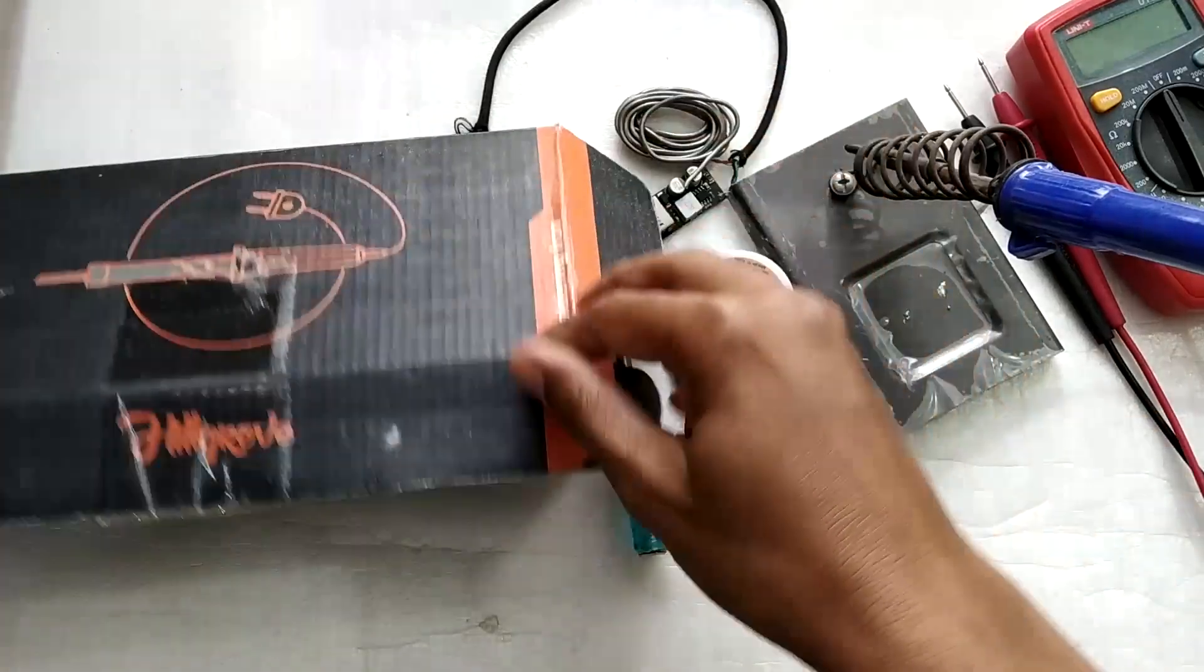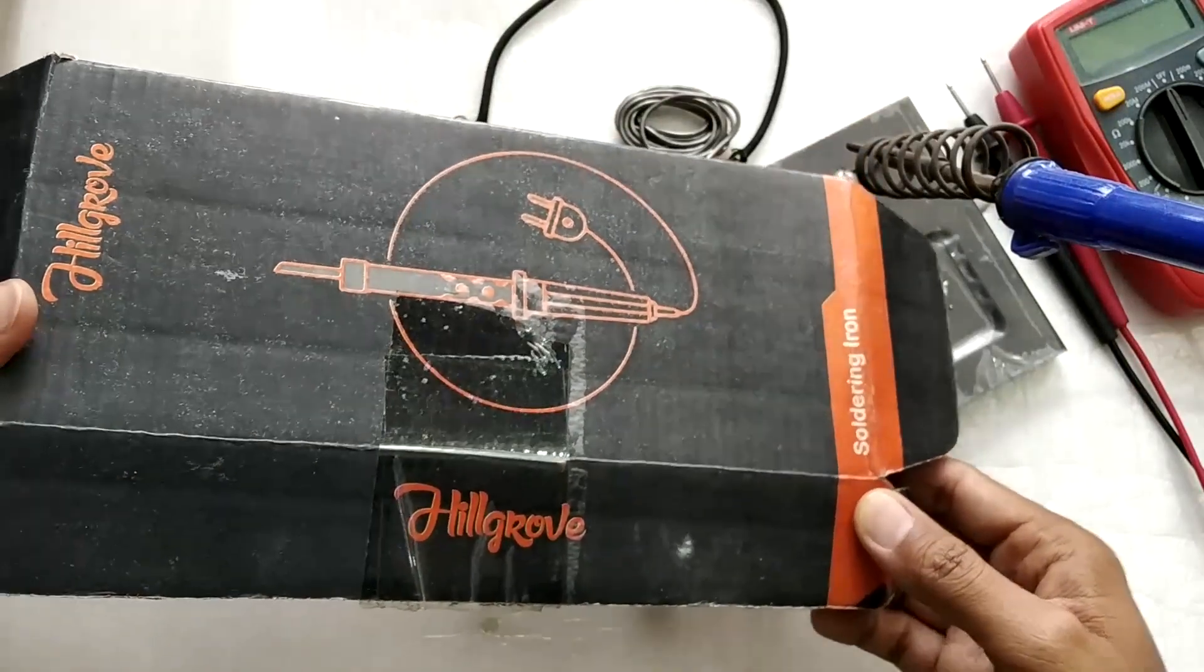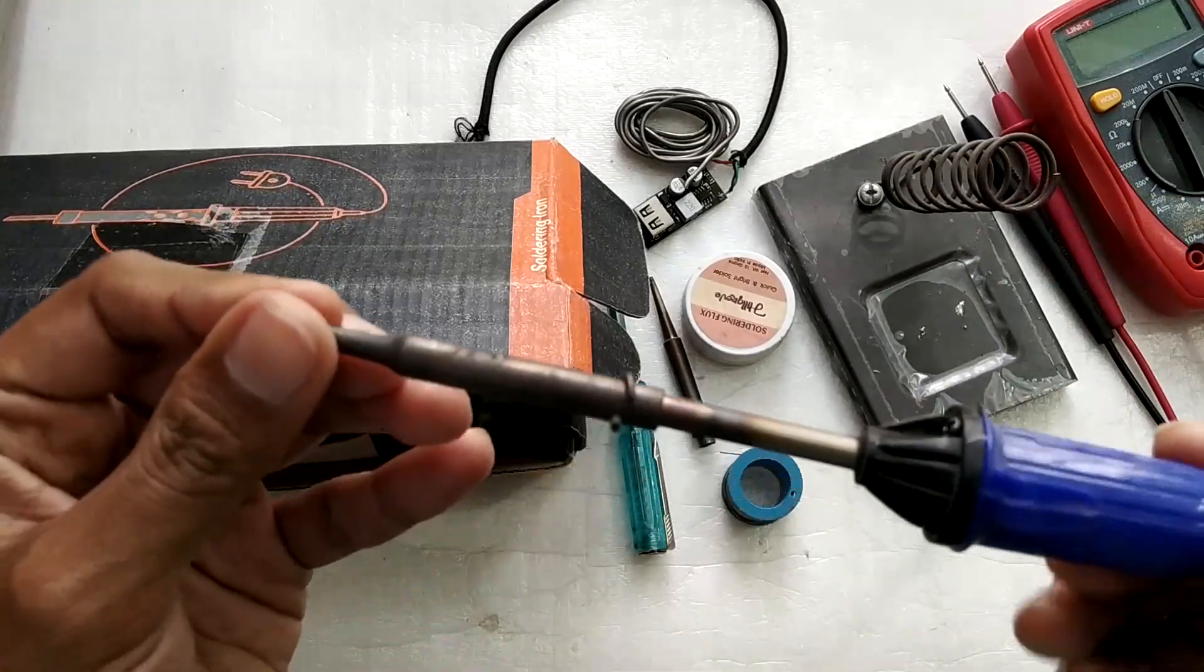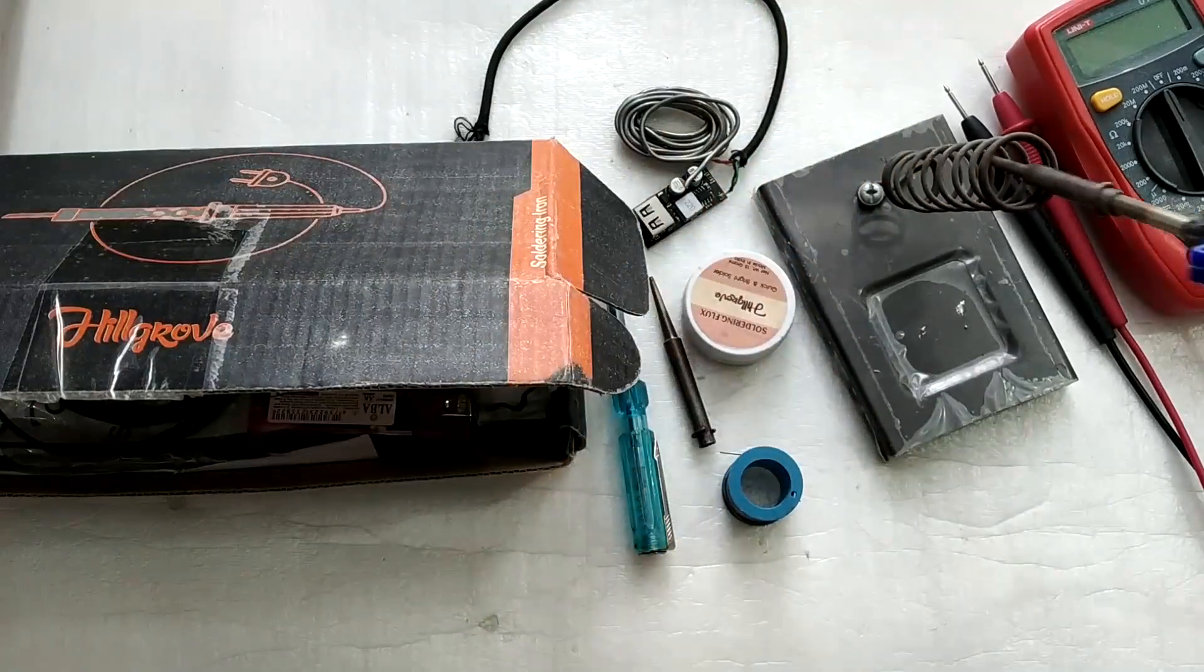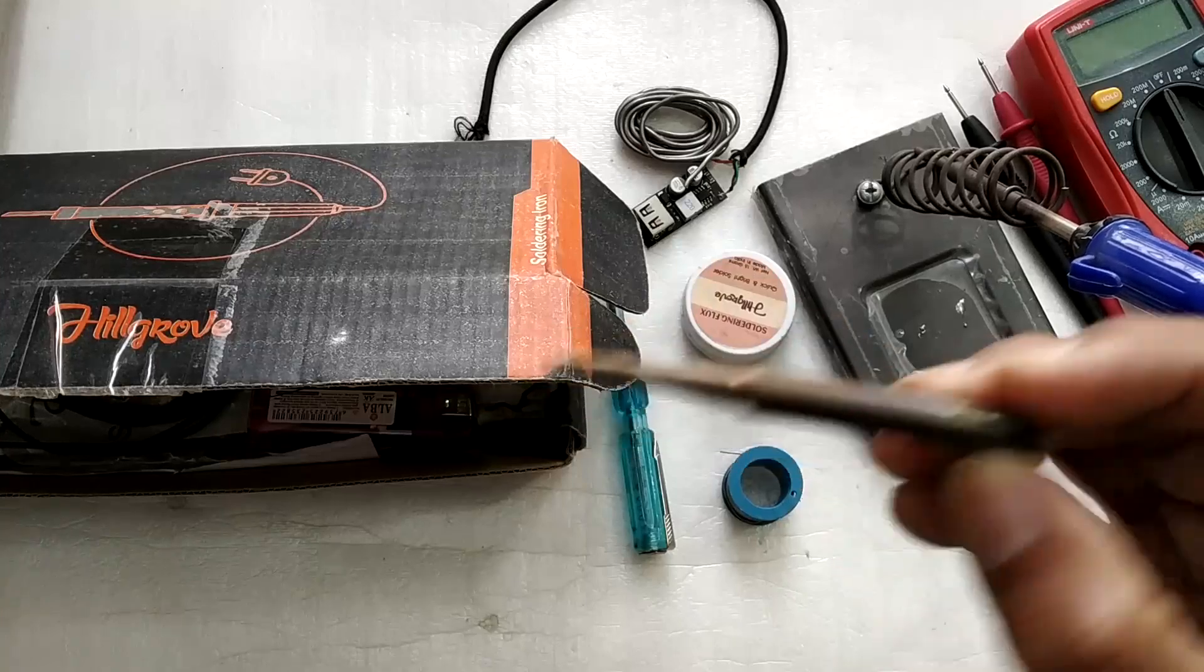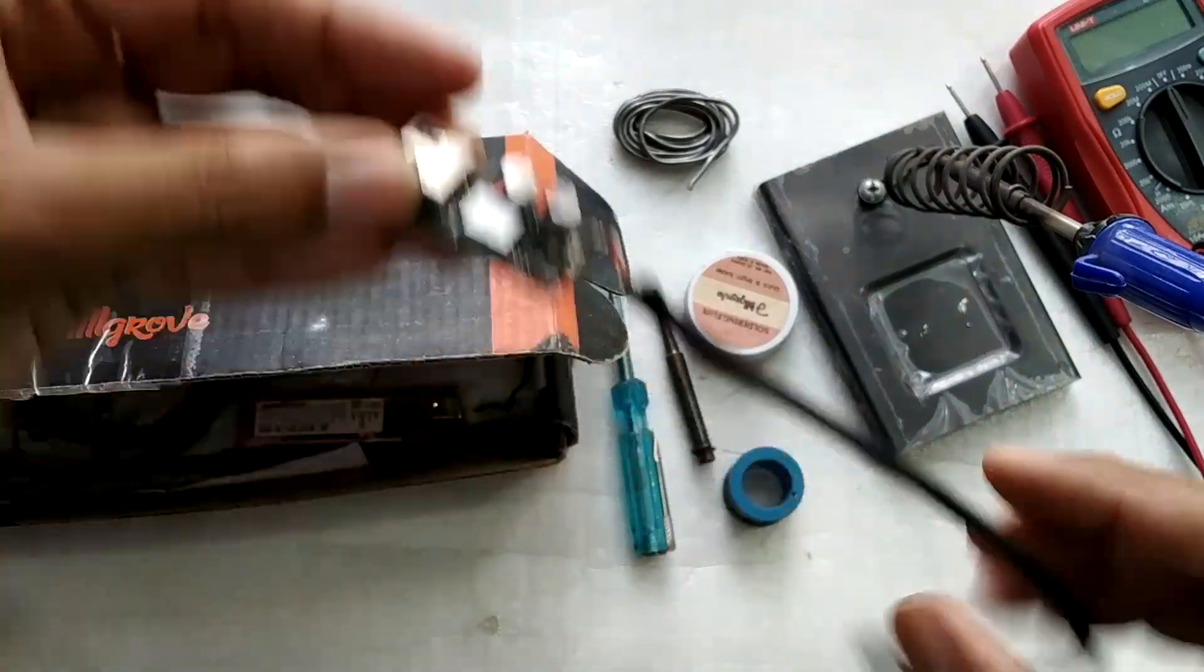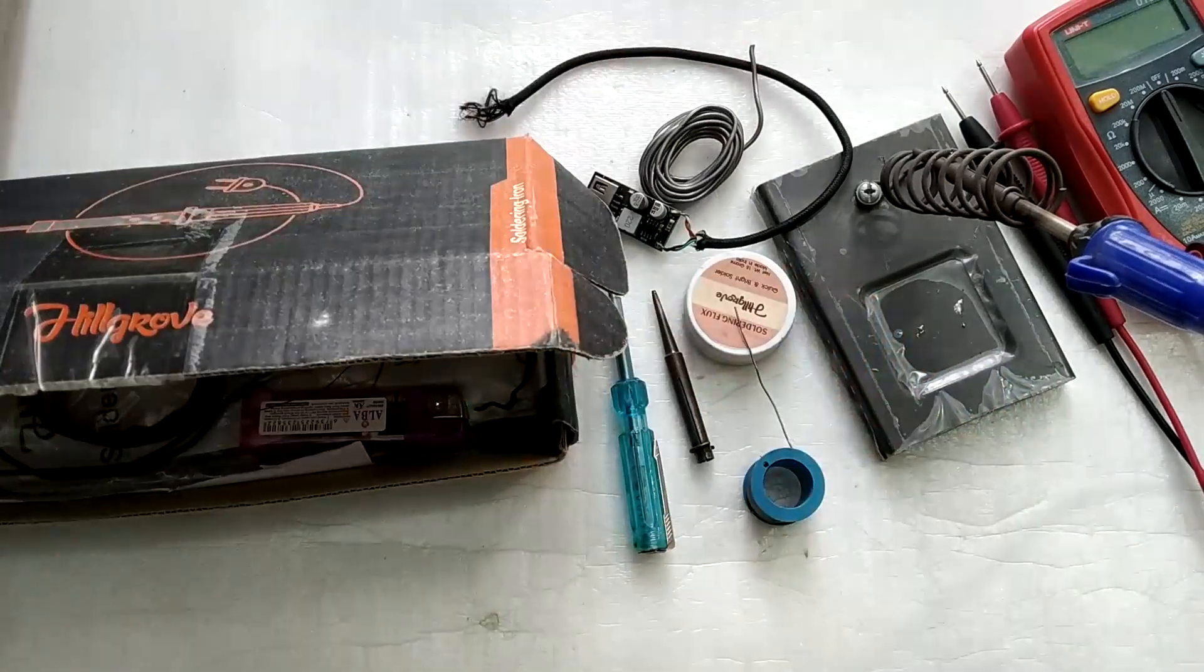This was the cheapest soldering iron I found on the internet and I've been using it for more than a year now. The tip has become a little black, which is normal. The stand is working fine. The other tip has also turned black, which is normal. I've used this for a couple of projects and it has worked really well. I was happy with the cable and soldering wire.